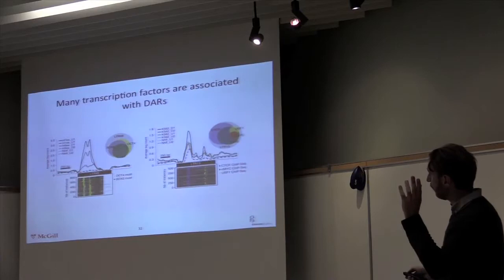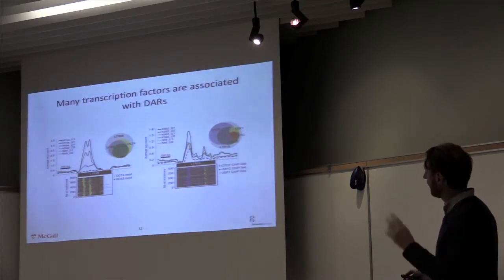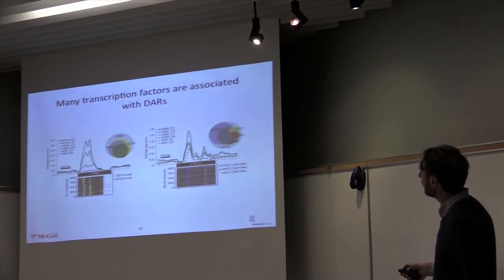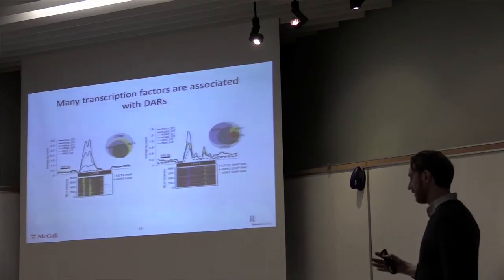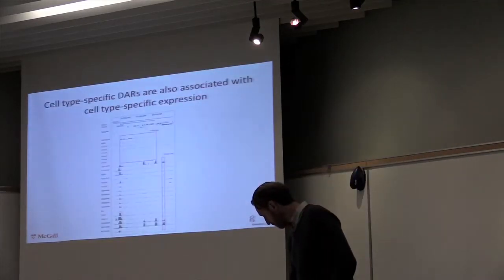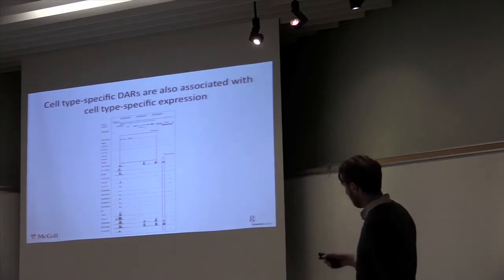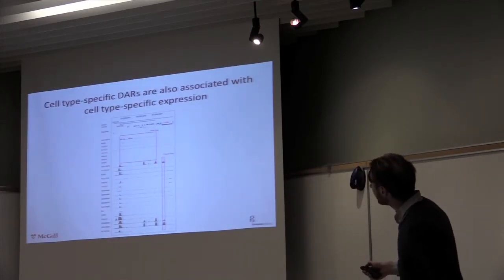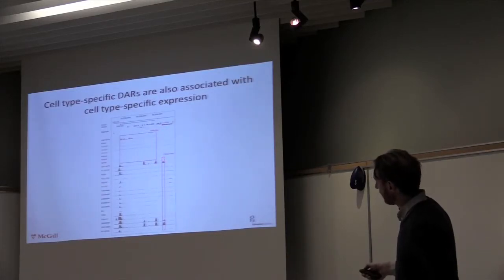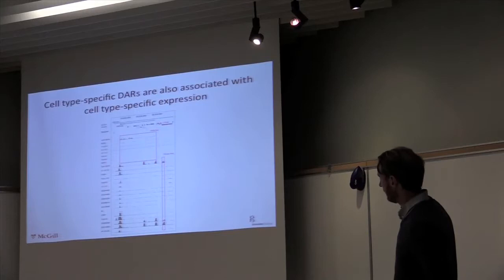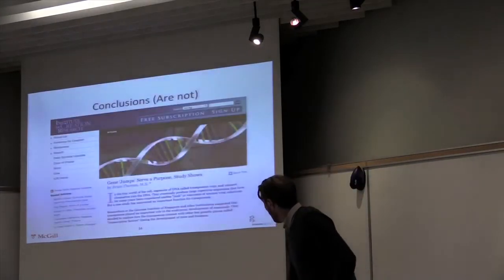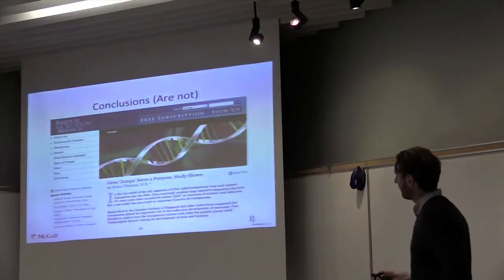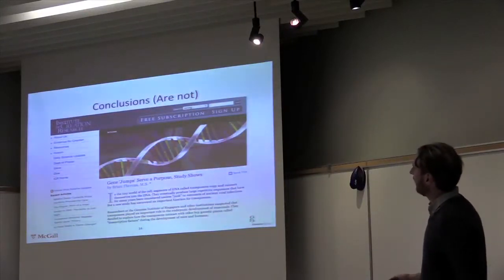So it really looks like there's a direct association between certain repeat families and certain transcription factors. We have a full list with lots of other examples of families. This one, MIR3, contains a motif for CTCF, and we find that's exactly the region that tends to be in open chromatin. We find examples where repeat families drive open chromatin specific to a cell type, which is also associated with expression only in that cell type.